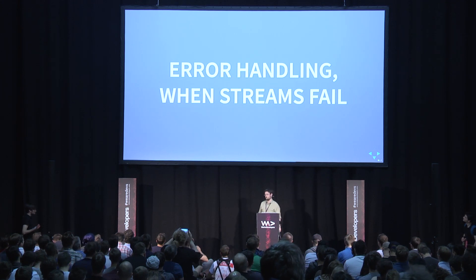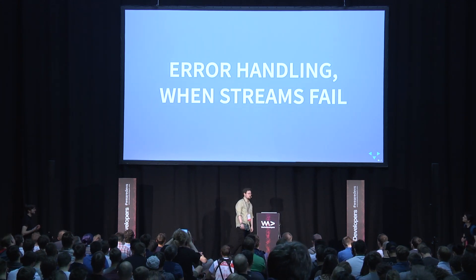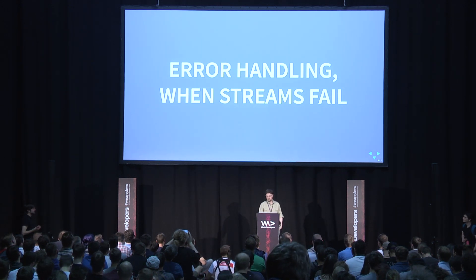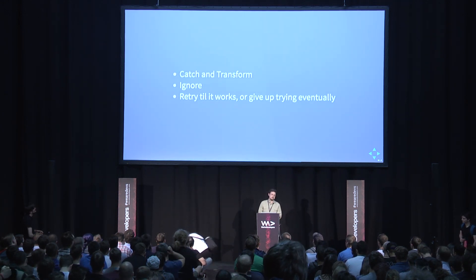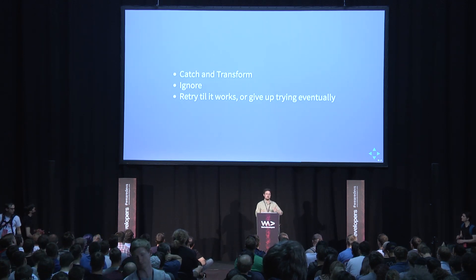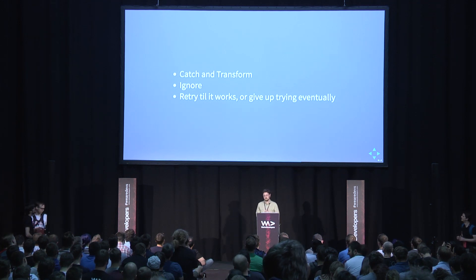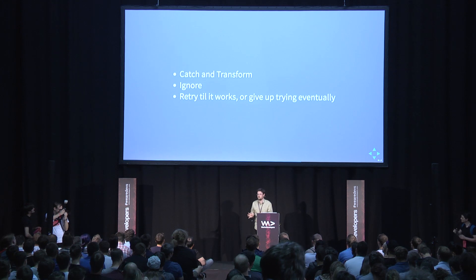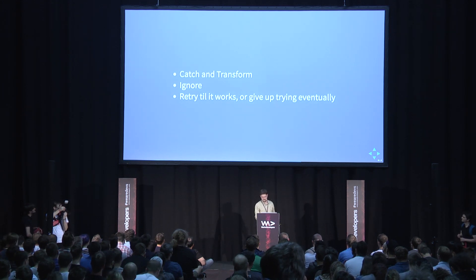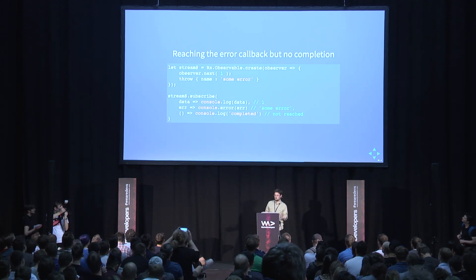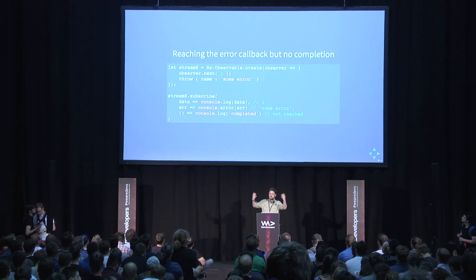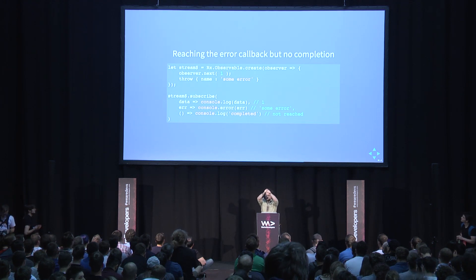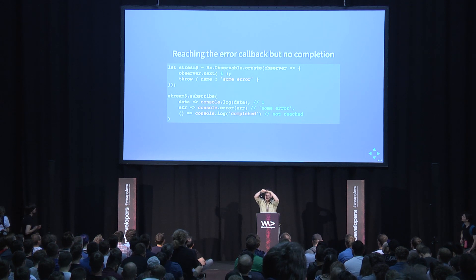Now let's talk about errors — we all hate them, but we need a structured approach. There are three approaches: catch and transform, ignore them completely, and retry until it works. In the base case where we do nothing, an observer next followed by a throw will emit the first value, hit the error callback, but never reach complete. We need to patch it somehow.